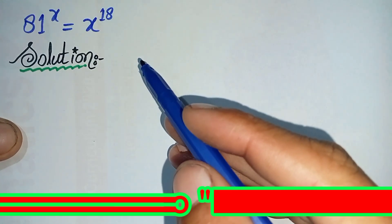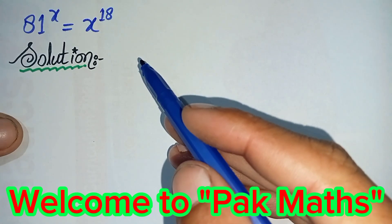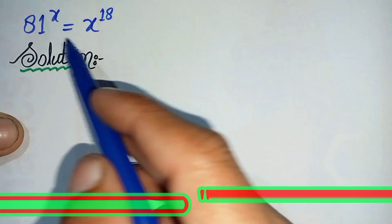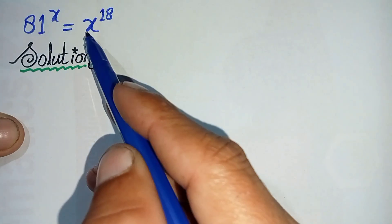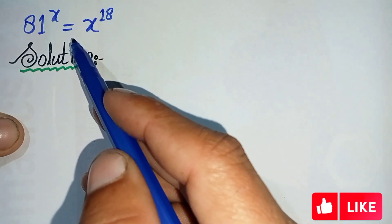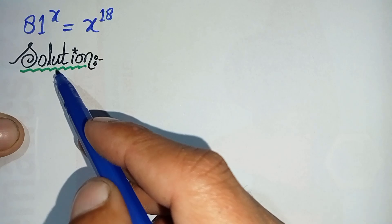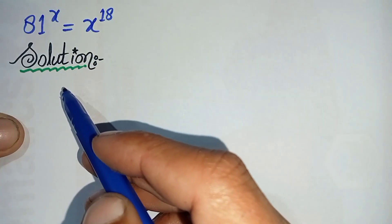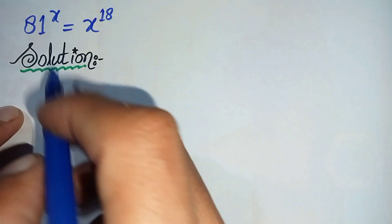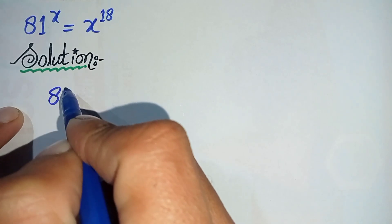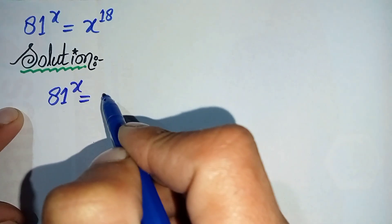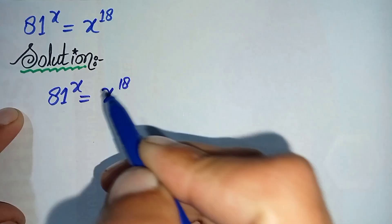Hi everyone, welcome back to Park Maths. In this video I'm going to solve this interesting exponential math problem: 81 raised to power x is equal to x raised to power 18. We will write the solution and rewrite this question step by step.